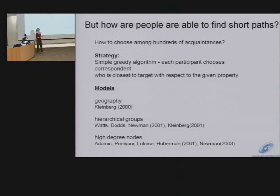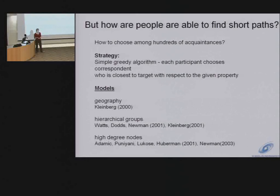Now for the more interesting thing: how are people able to find these paths? If they really do know a thousand different people, how do they know which one is the right one? Over the decades, as people have been studying this problem, they would ask people about their strategy. And overwhelmingly, they would say it's one of three simple things: either they choose someone who is geographically closer to the person they're trying to reach; or they might use the person's profession — if the person is a stockbroker and you know someone who's a banker, you'd pass it to the banker; and finally, if they felt really stuck, they might choose someone they perceive to be well-connected, who is more likely to know someone closer to the target. Several models have been proposed to explain how social networks could be structured to allow such simple strategies to work.